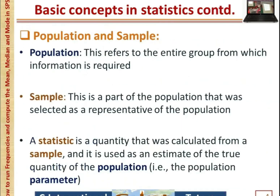Let's look at population and sample. Population refers to the entire group from which information is required, while a sample is a part of the population that was selected as a representative of the population. A statistic is a quantity that was calculated from a sample, and it is used as an estimate of the true quantity of the population — that is the population parameter.